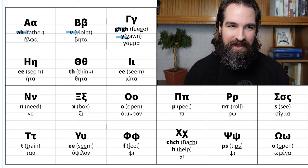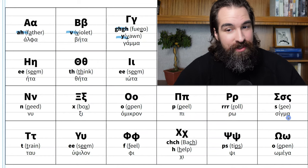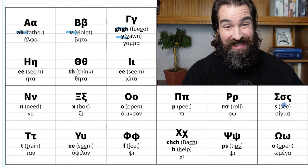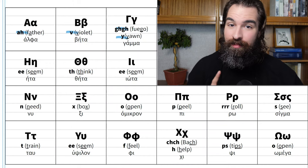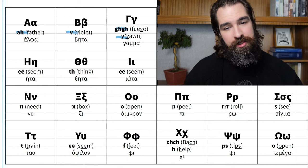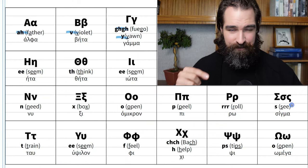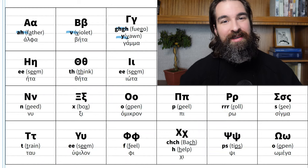Next we have sigma. There are three options: the capital, the sigma used at the beginning or middle of a word, and the sigma always at the end of a word — called the teliko sigma, the final sigma. This letter is an anomaly in that it has two lowercase versions. The final lowercase version, which looks most like an S, is used only at the end of words. Sigma makes an S sound, like the word 'sea.'